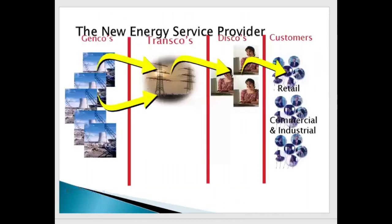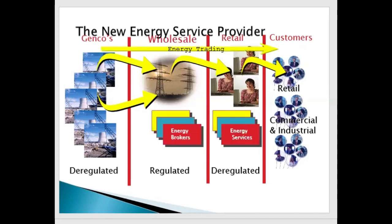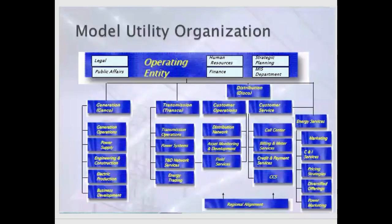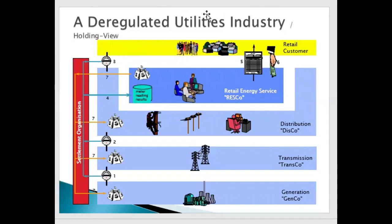Going deeper, we have GenCo — generation corporations — linked to TransCo, which transports to DisCo, and then to the customer. Looking at the value chain, you can see the final invoice goes to the retail customer. But before that final invoice, there are many segments: GenCo, TransCo, DisCo, retailer, energy service providers, and then the retailer. The energy is generated from GenCo and moves to the transmission unit, where a meter comes into picture.